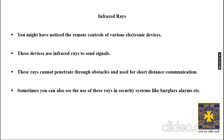The third type of unguided media is infrared rays. The remote controls of various electronic devices use infrared rays to send signals. These rays cannot penetrate through obstacles and are used for short-distance communication. That is why TV remotes, washing machine remotes, and all home appliance remotes use infrared rays. If you stand between the remote and the device, the remote will not work because infrared rays cannot penetrate obstacles.